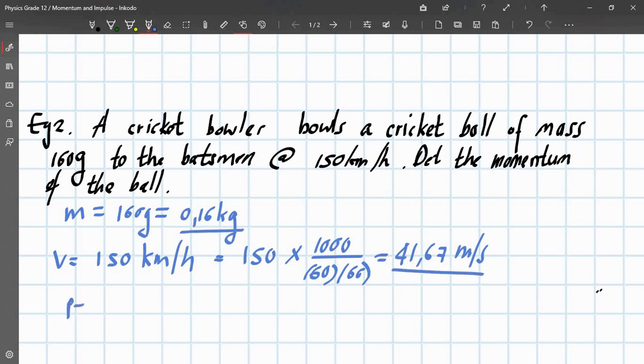And then finally, you just plug it into the formula. p is equal to mv. Your mass 0.16, velocity is 41.67.